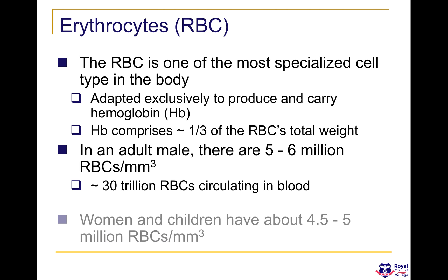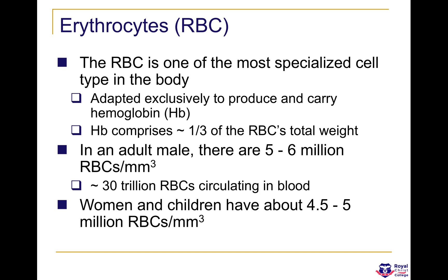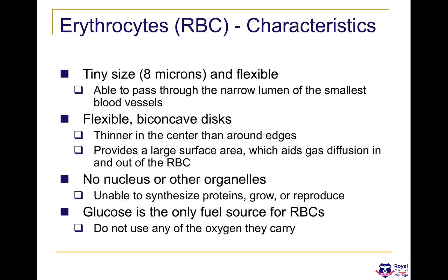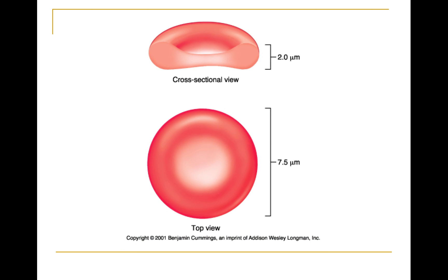About 30 trillion blood cells circulate in the blood. Women and children have about 4.5 to 5 million per cubic millimetre whereas men have 5 to 6 million. Red blood cells are very tiny, which allows a very narrow diffusion distance so gas diffusion can occur rapidly. They have a biconcave shape which increases surface area for gas diffusion, they have no nucleus, and glucose is their only fuel source. A normal red blood cell has a diameter of 7.5 micrometres and a thickness of around 2 micrometres.